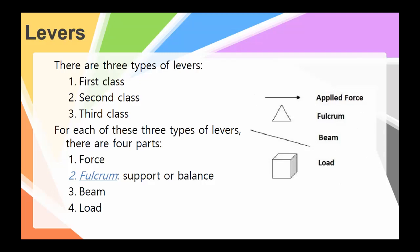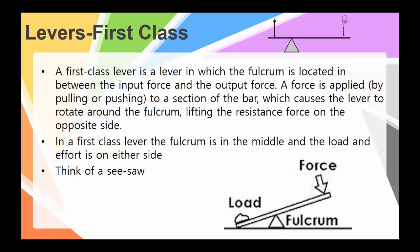Okay, so let's start by taking a look at first class levers. Now, a first class lever is one in which the fulcrum is located between the input force and the output bar, which causes the lever to rotate or move up and down on the fulcrum, this lifting the resistance force on the opposite side. In a first class lever, the fulcrums in the middle and the load and effort are on either side. And you're typically going to be pushing downward. So think of like a seesaw. You go down on one side, it pushes up the other side, you push to that side down and the other side goes up. Okay, so this is a perfect example of a first class lever.